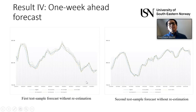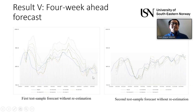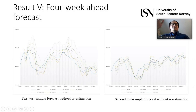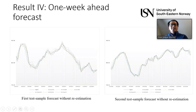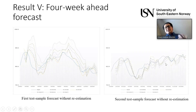Here we see the forecasted time series. In the test sample, the forecasted series are a bit more spread from the original — the blue one is the original. For one week ahead forecasting the spread is smaller, and for four weeks ahead it is even more spread. This aligns with forecasting intuition: the further ahead we forecast, the weaker the performance.